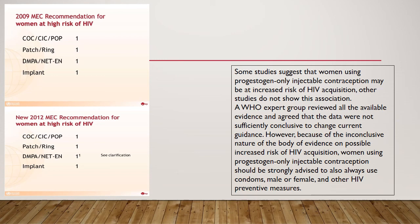Some studies suggest that women using progestogen-only injectable contraception may be at increased risk of HIV acquisition, while other studies do not show this association. A WHO expert group reviewed all available evidence and agreed that the data were not sufficiently conclusive to change current guidance. However, because of the inconclusive nature of the evidence on possible increased risk, women using progestogen-only injectable contraception should be strongly advised to also always use condoms, either male or female, and other HIV preventive measures.